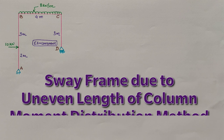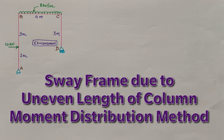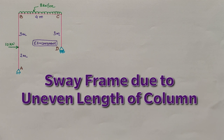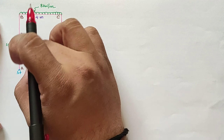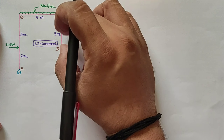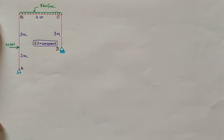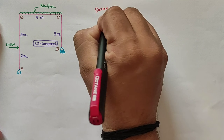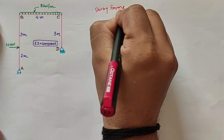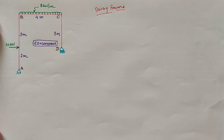Hello friends, today we are going to learn about the moment distribution method for a given frame. Observing the frame, we have the span of AB as 5 meters and span of CD as 3 meters. So according to the unevenness of the length of the column, the given frame is known as a sway portal frame. So we have to analyze the given frame as a sway portal frame analysis.